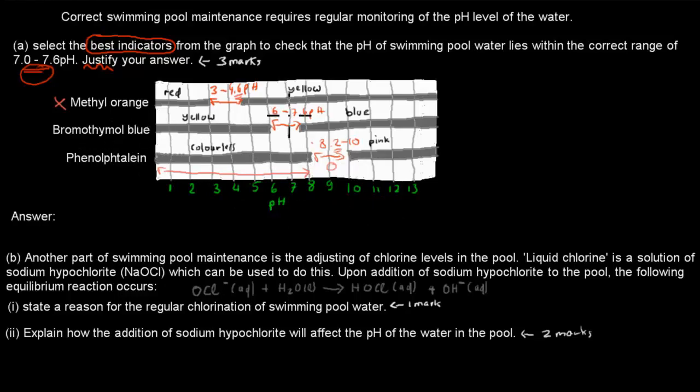Whereas bromothymol blue, its optimum range is 6 to 7.6. So that's actually quite close. So if it has lower than 6, it's going to be yellow. Higher than 7.6, it's going to be blue. So if the color is not yellow or blue, that means it's in its good range. So we're going to use that bromothymol blue to check it and not the other ones. And that's what I gave in my answer.